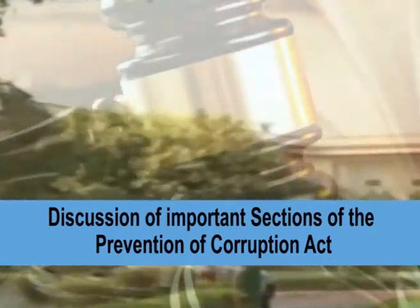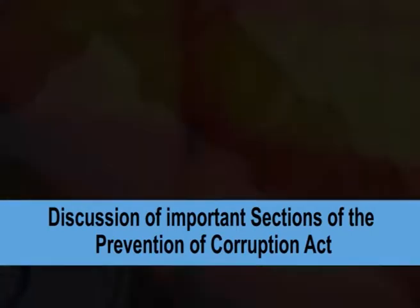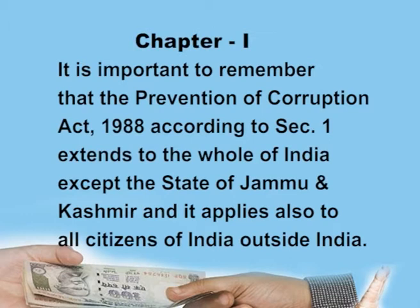Discussion of the important sections of the Prevention of Corruption Act. In the light of the objectives and important features, some sections of the Prevention of Corruption Act 1988 become more relevant to discuss. Starting with Chapter 1, it is important to remember that according to Section 1, the Act extends to the whole of India, except the state of Jammu and Kashmir, and it applies also to all citizens of India outside India.